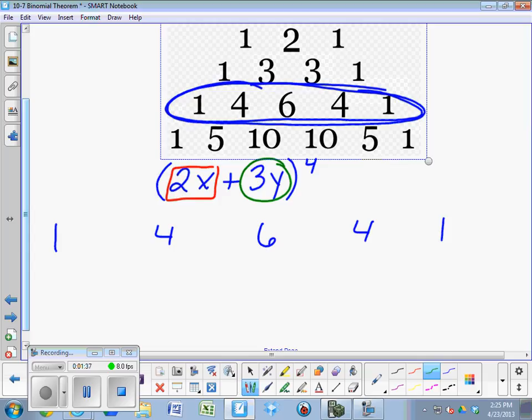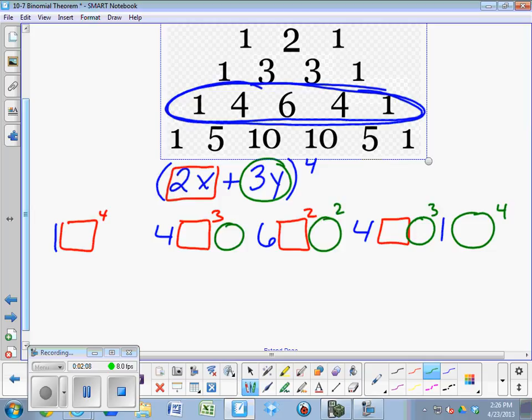So instead of doing a to the fourth, a to the third, a squared, and a, we're going to do red box to the fourth, red box cubed, red box squared, red box plain, red box gone. When you get to the term where the red box has been eliminated, that's where the green circle shows up to the fourth power. Green circle cubed, green circle squared, green circle, green circle gone.